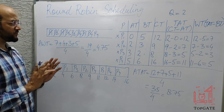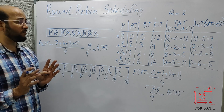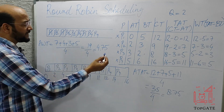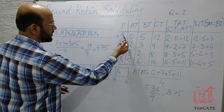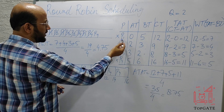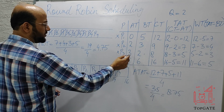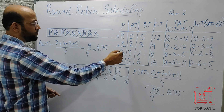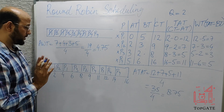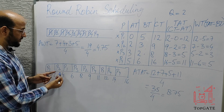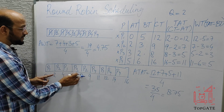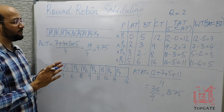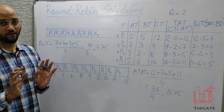The key takeaway: always construct the ready queue when solving Round Robin problems. Many people make the mistake of simply cycling through P1, P2, P3, P4 in order, which is wrong. As shown here, the actual order was P1, P2, P1, P3, P2, P4, P1, P4, P4. Making the ready queue is mandatory to avoid mistakes. Thank you so much.